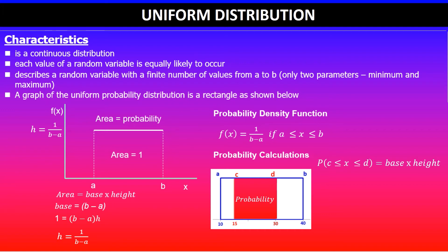The probability for the random variable x between c and d is given by the base times the height of that rectangle. So we can see that the base will be given by (d - c), and the height is given by 1/(b - a).